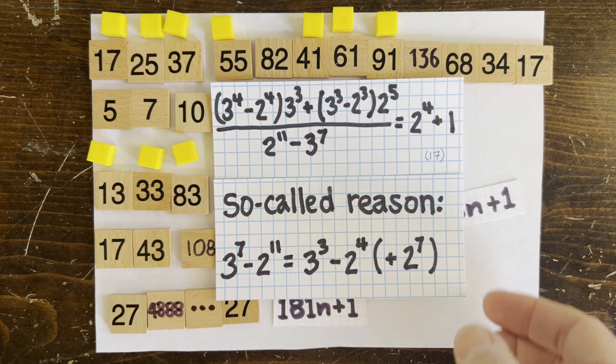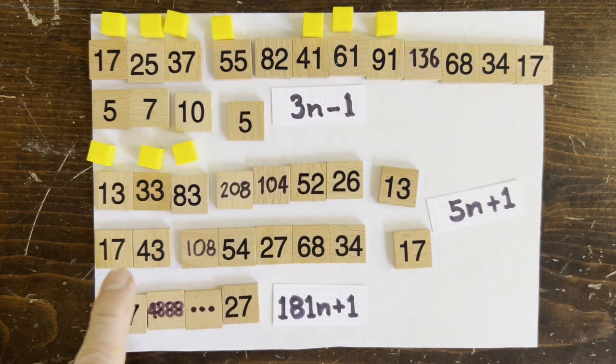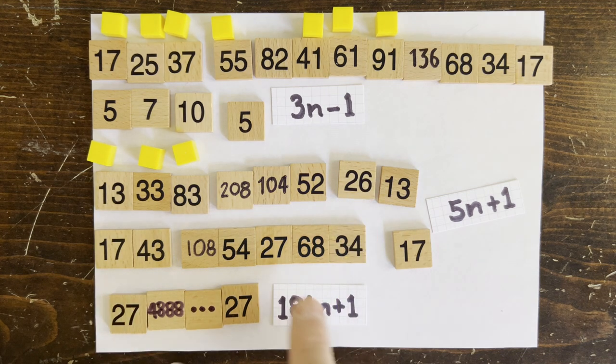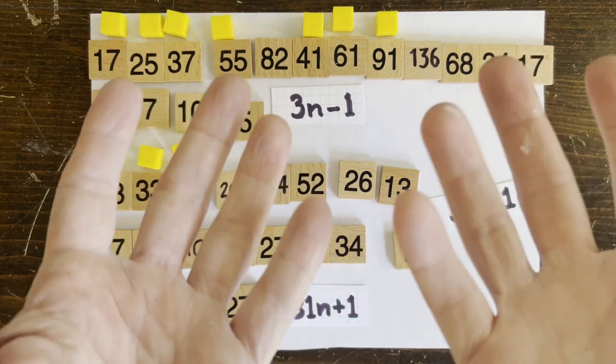And look here. 43 minus 17 is 26, which is found in the other loop. And 27 shows up in two loops. Are these patterns, or maybe just one-off coincidences?